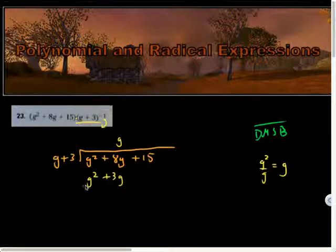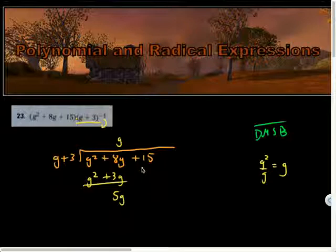Subtract step: g squared minus g squared is 0. 8g minus 3g, because don't forget you're subtracting, it's the subtract step after all. It's going to be 5g. Oh I thought I wrote g but it's a y. Yeah that's definitely y-ish looking. I'll fix that right there.